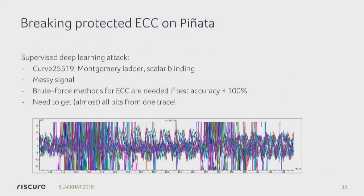Okay, we've done AES. Let's do ECC — completely different algorithm of course. In this case, we're looking at Curve25519, and it's implemented using a Montgomery ladder and scalar blinding. For those of you who don't know what scalar blinding is, I'm not going to explain it right now, but you can't use the nice trick of accumulating more and more traces. You actually take one trace, and you can only be off by a couple of bits in your key recovery. So here you need to be very precise at the modeling and extracting the right key bits.